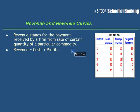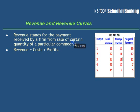This is called Revenue. Revenue means the payment which a farmer receives from sale of a certain quantity of a particular commodity. In general terms, we can say the sale is revenue.